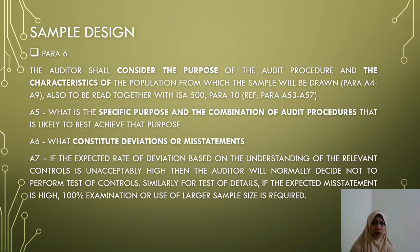There is a need to define what constitutes deviations or misstatements. Under A7, if the expected rate of deviation based on the understanding of the relevant controls is unacceptably high, then the auditor will normally decide not to perform tests of controls.